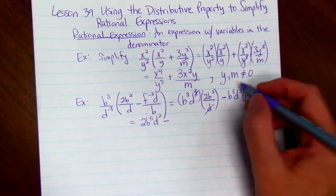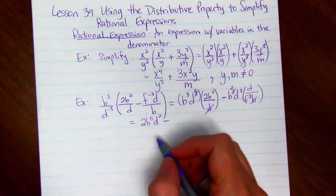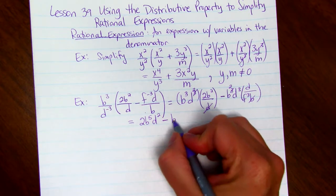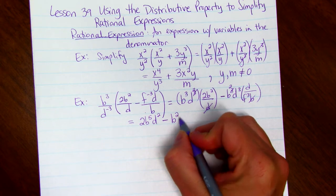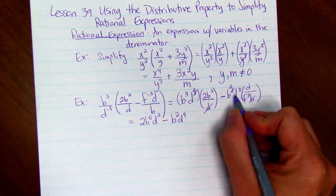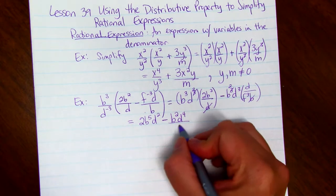we can cancel one of the b's. Make it b squared. So we have b squared times d to the 4th, d cubed times d, all divided by f cubed.